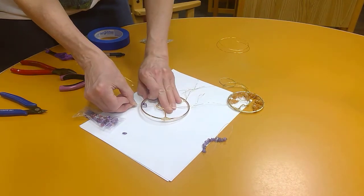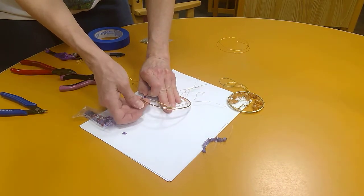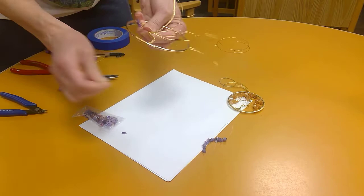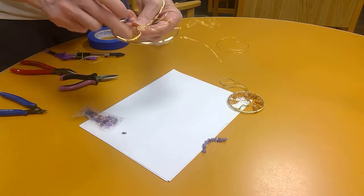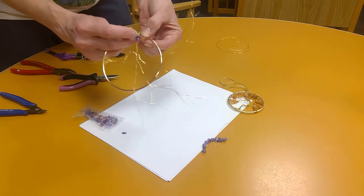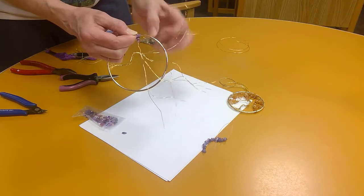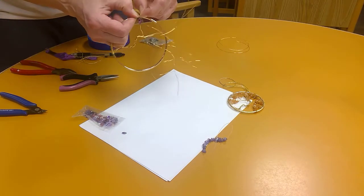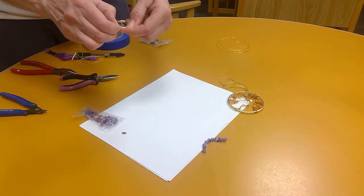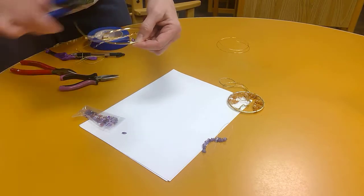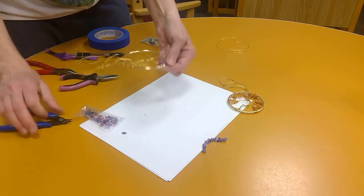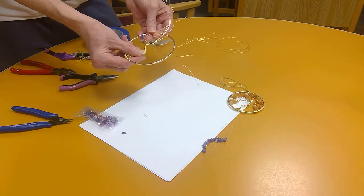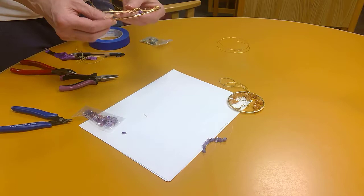Once you've got the branch where you want it, you're going to wrap that tail end around pretty tight. One, two, at least three times. See, I did it on this side, now I'm going to come back around and do it on the other side of the wire, but you don't have to do that if you don't want to. This is the reason why you need to cut these. You're just gonna cut that off and you're set.